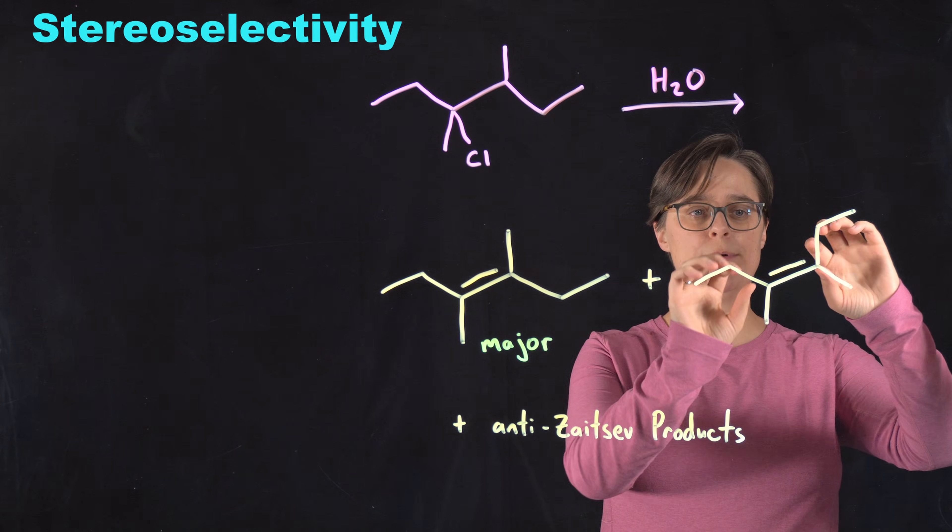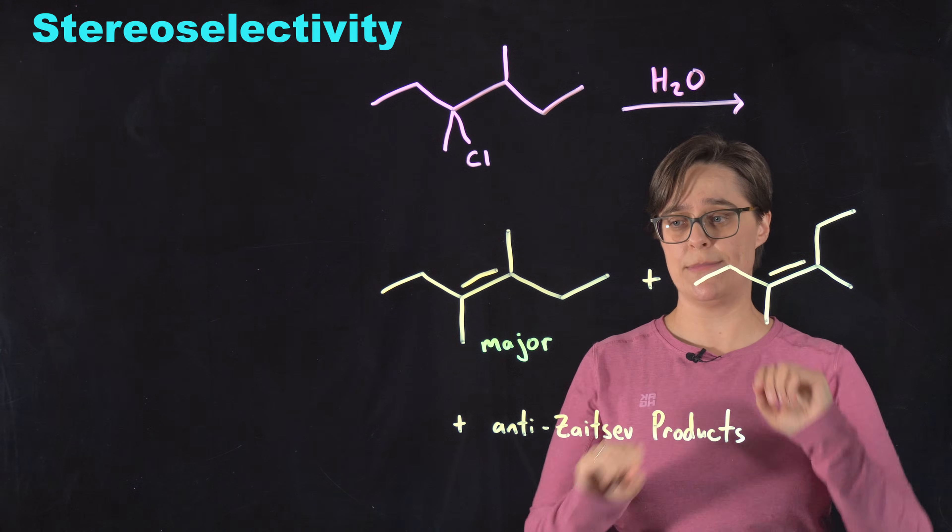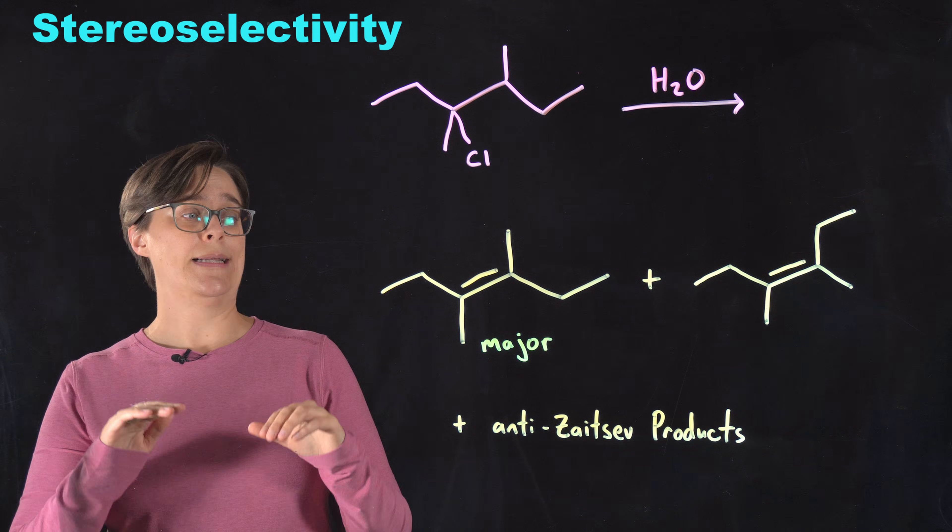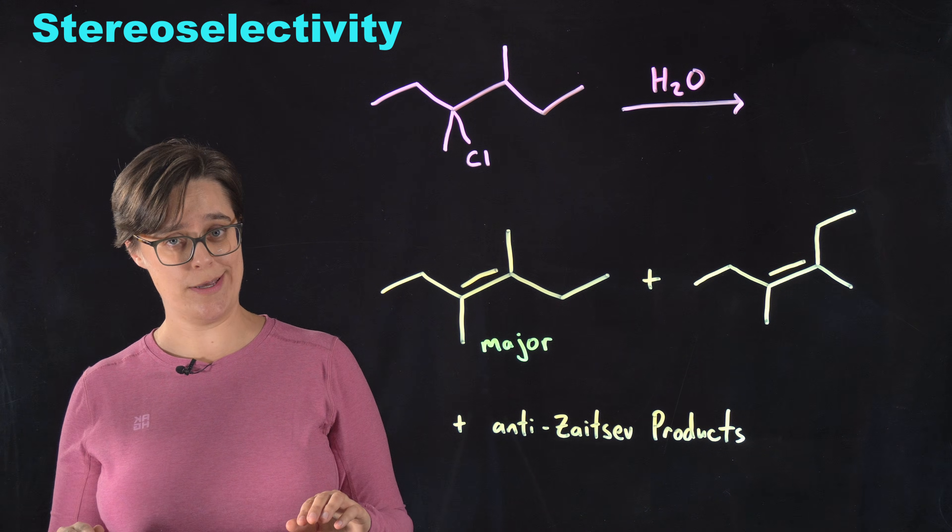Whereas this minor product, the bulky groups are on the same side of the double bond. Notice that I said most of the time. Let's talk about when that is not the case.